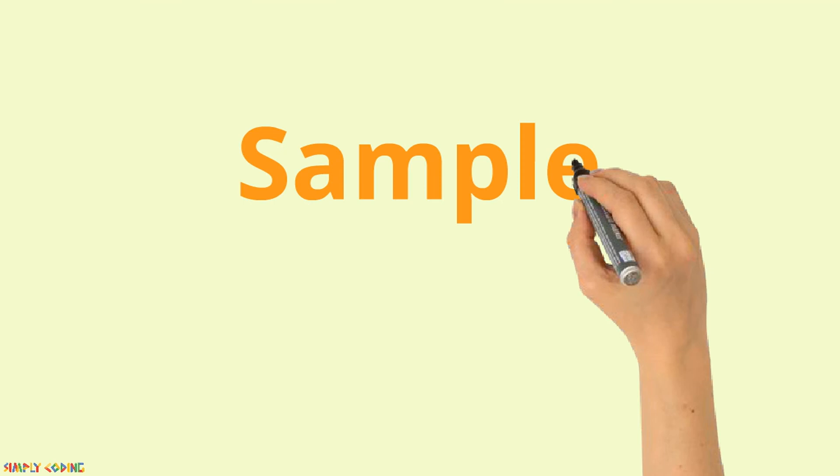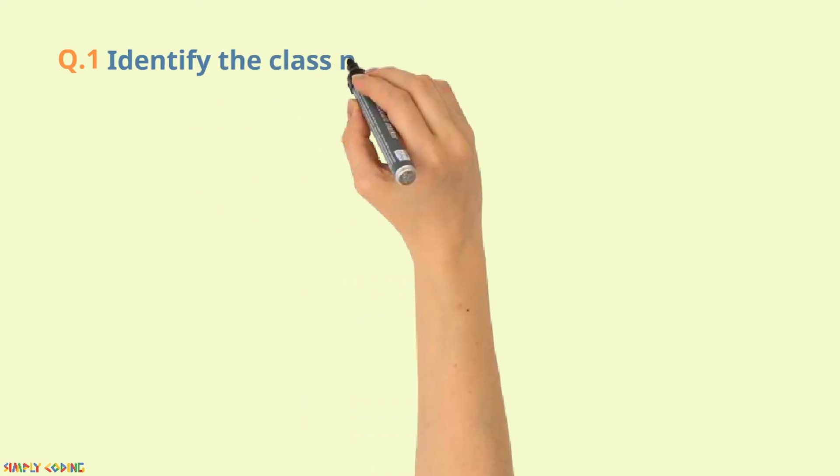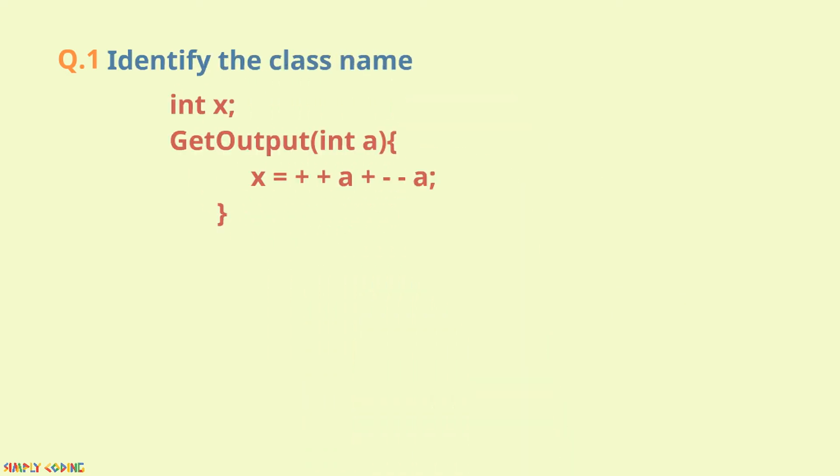Let's take a look at the kind of questions you could be asked on constructors. First type is where code is given and you are asked questions on it.